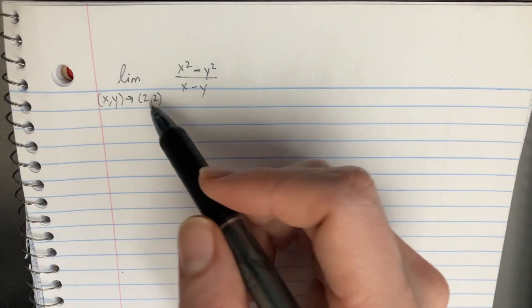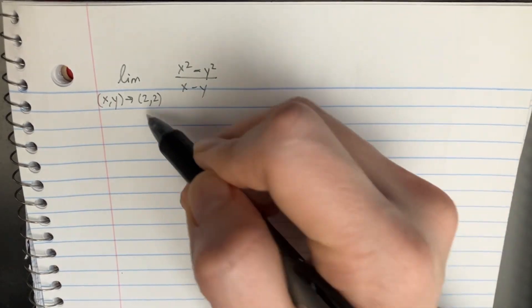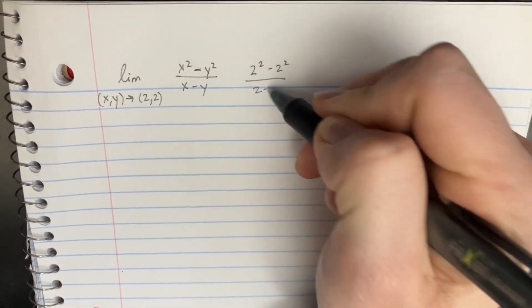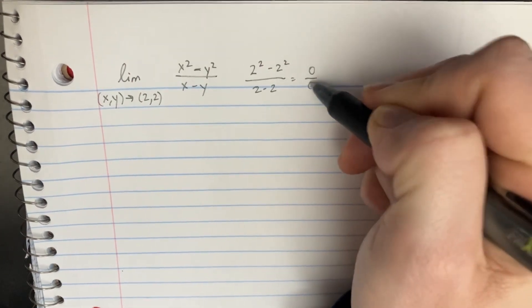Let's take a look at this basic multivariable limit. At first we're going to plug in the numbers. We're going to realize that 2² - 2² divided by 2 - 2 leads us to an indeterminate form.